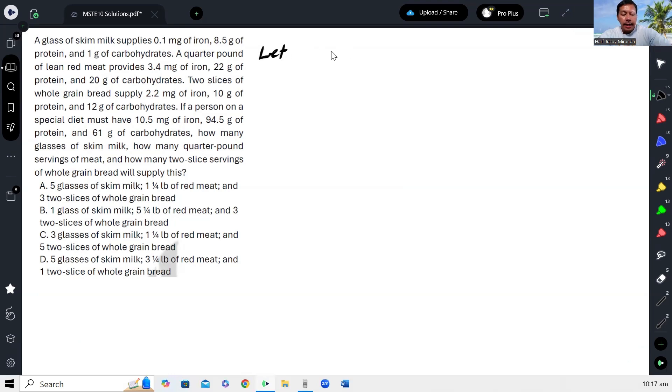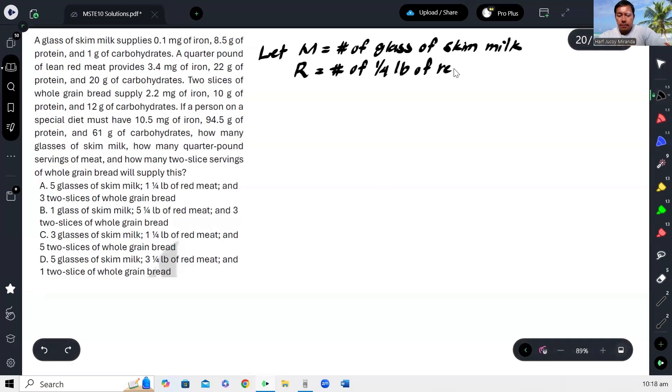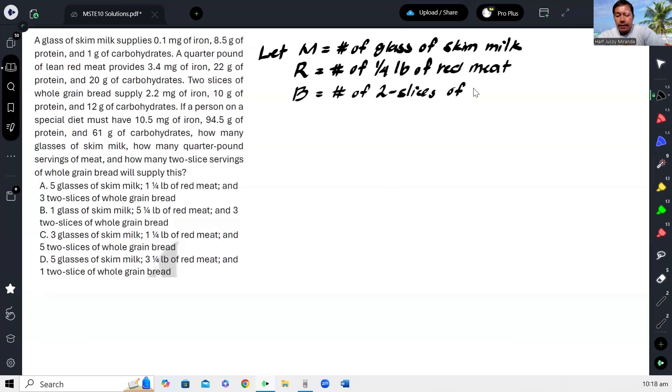Okay, let M be the number of glass of the skimmed milk. May skimmed milk, mayroong quarter pound of red meat. So red meat, tawagin ko na na R. This is the number of quarter pound of red meat. And then lastly, we have the slices of bread. So tawagin ko lang ng B for bread. So number of two slices of bread, or wheat bread, or full grain bread.